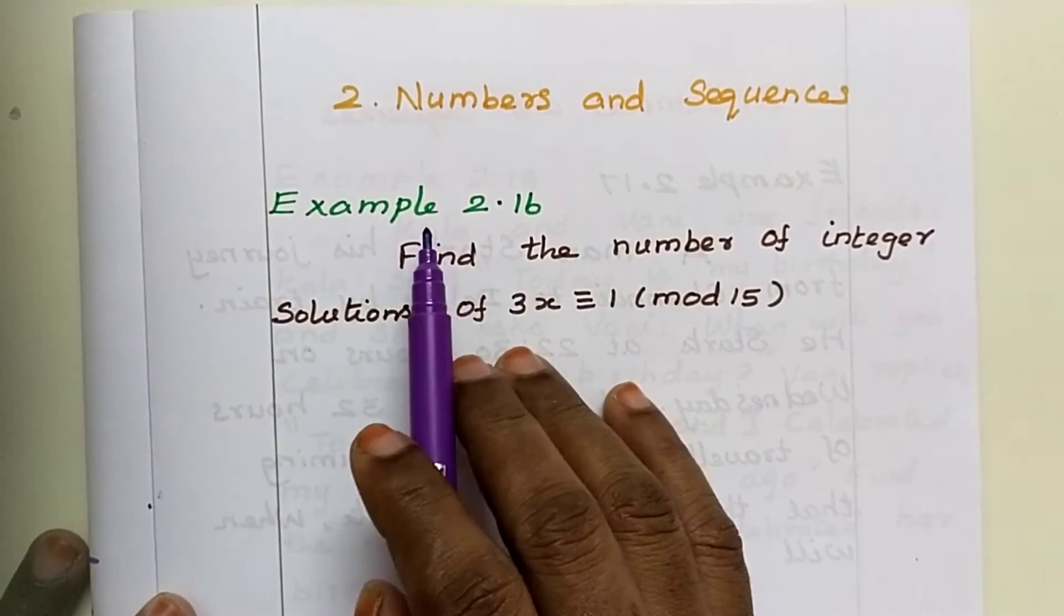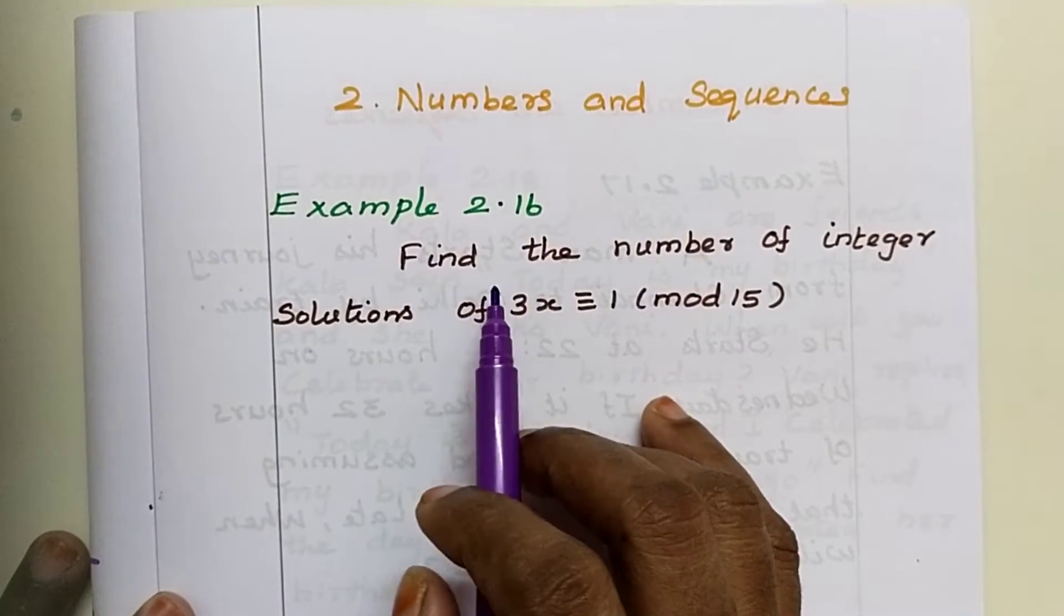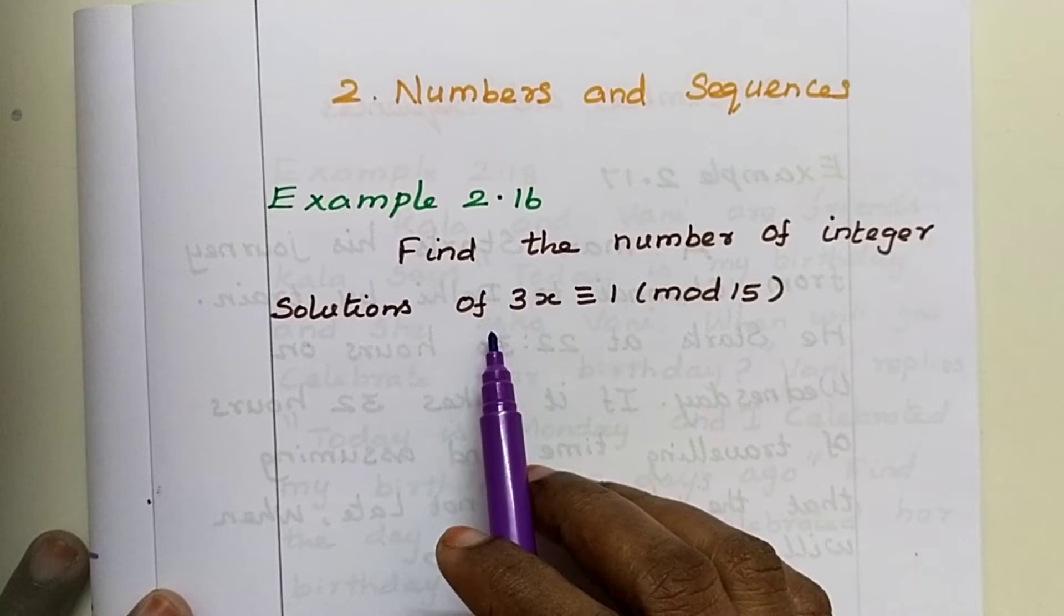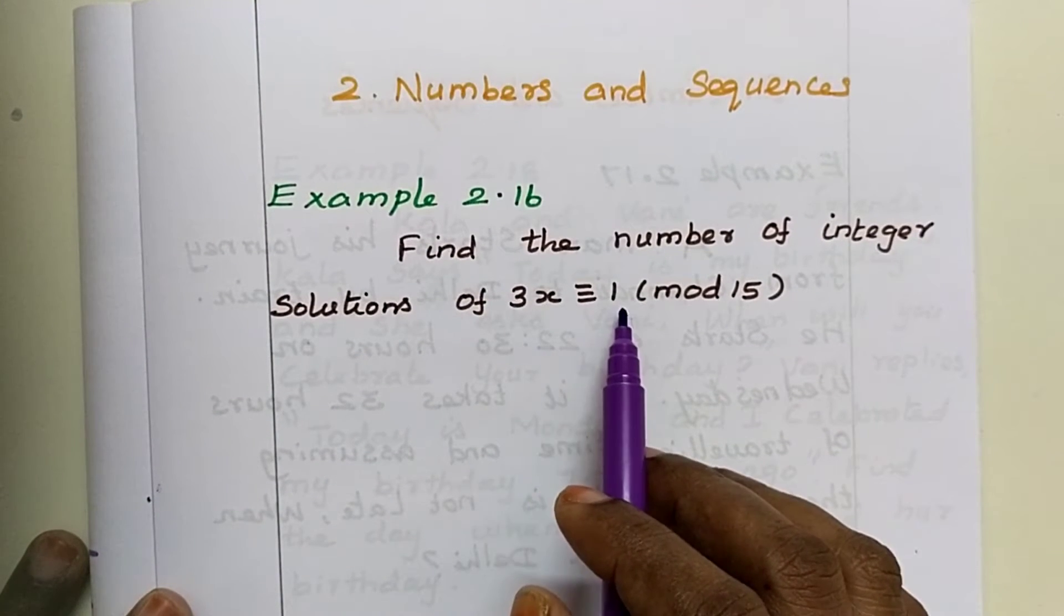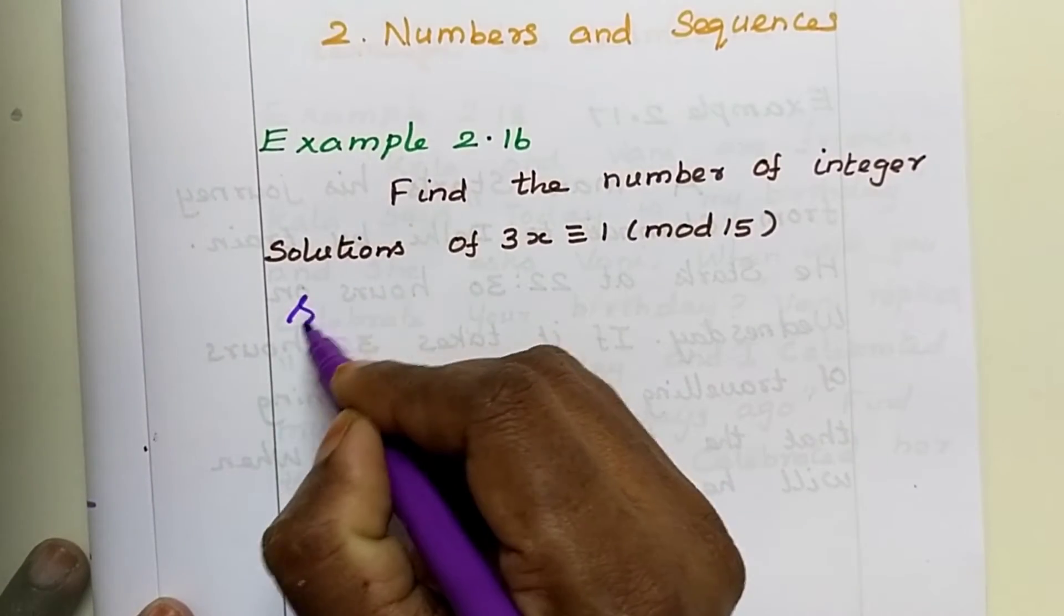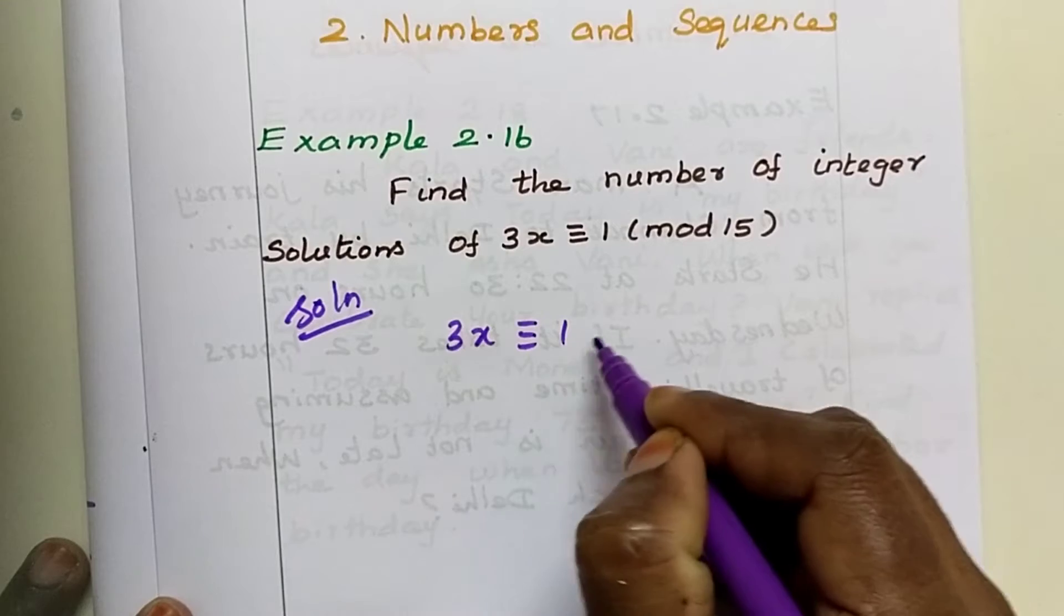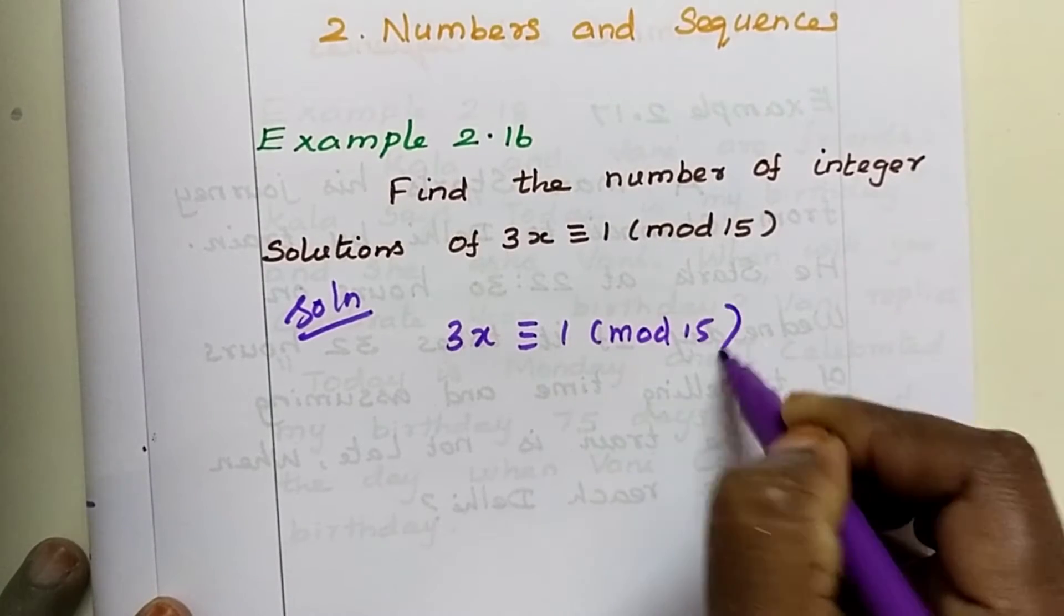Lesson 2, Numbers and Sequences, Example 2.16. Find the number of integer solutions of 3x congruent to 1 mod 15.